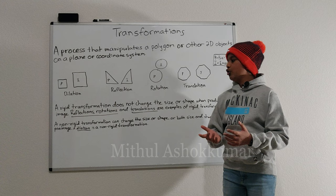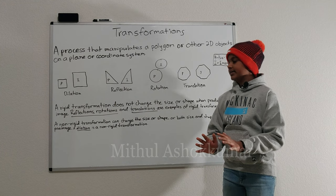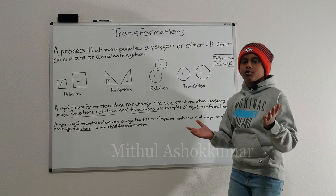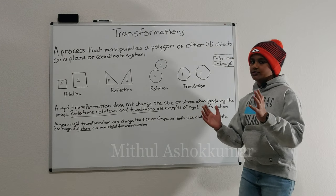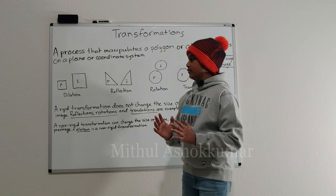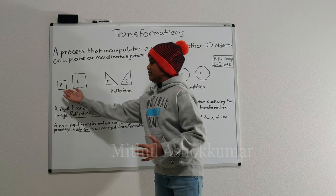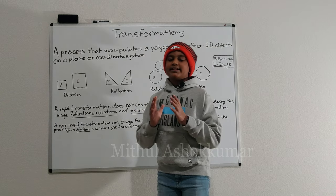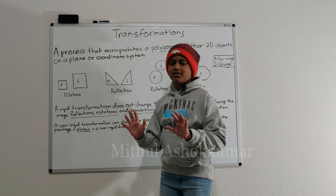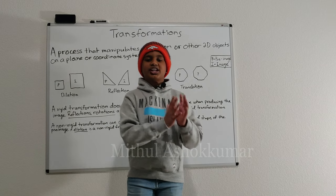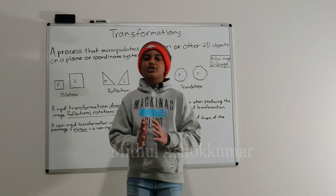What is a non-rigid transformation? A non-rigid transformation can change the size or shape, or both size and shape of the pre-image. A dilation is a non-rigid transformation. This is the pre-image. When we produce the new image as a part of transformations, it changes the size but not the shape, which is why dilations is a non-rigid transformation. Even if the size and shape change, it is still considered a non-rigid transformation.